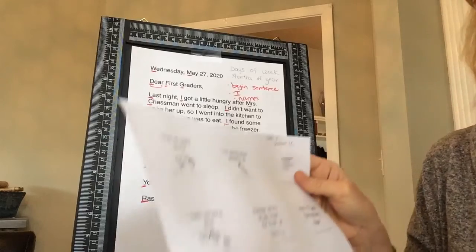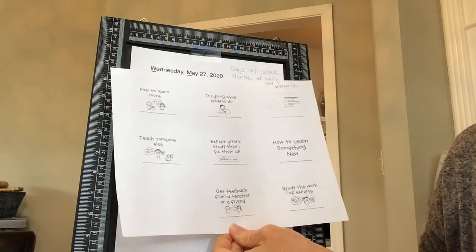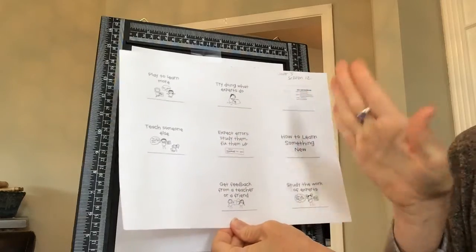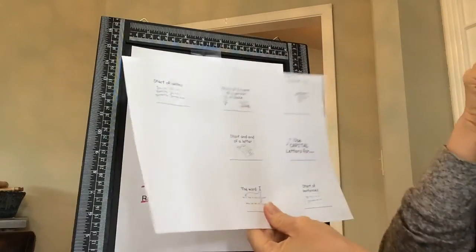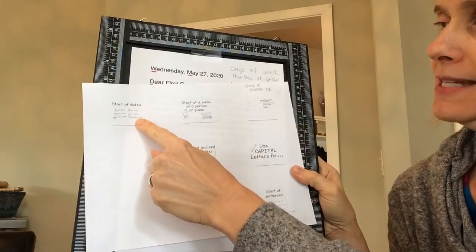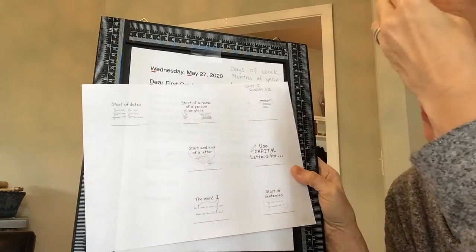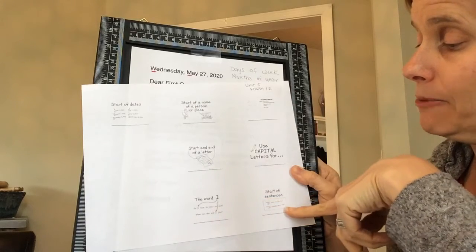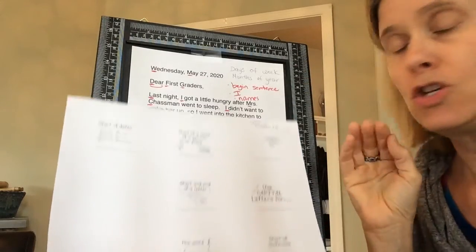If you look in your packet, you'll see two papers that help with this. One gives you ideas for how to study an expert. This is all about capital letters — what we just talked about. Dates need to be uppercase, names of people or places need to be uppercase, the start and ending of a letter need to be uppercase, the word 'I' needs to be uppercase, and the start of sentences. This is everything we just covered in this letter.